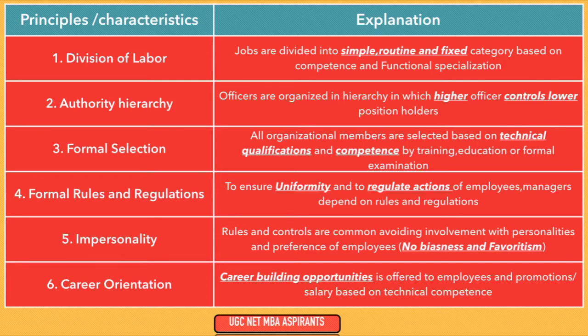Third, formal selection: all organization members are selected based on technical qualifications and competence through training, education or formal examination, and each organization has its own formal selection process. Fourth, formal rules and regulations: to ensure uniformity and regulate employee actions, managers depend on rules that everyone must follow inside the organization. Fifth, impersonality: rules and controls are common, avoiding involvement with personalities and preferences — no biasness or favoritism. Sixth, career orientation: career building opportunities and promotions are based on technical competence.